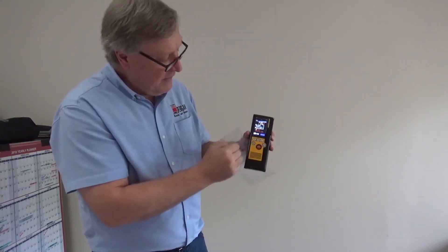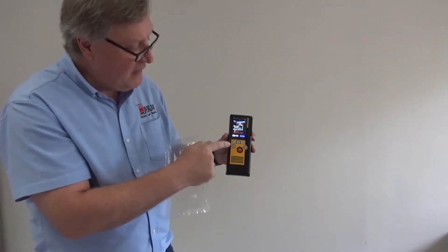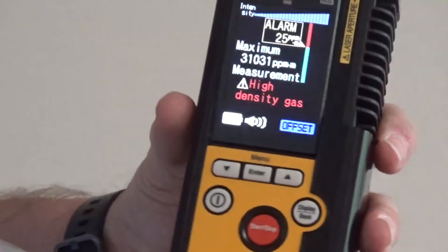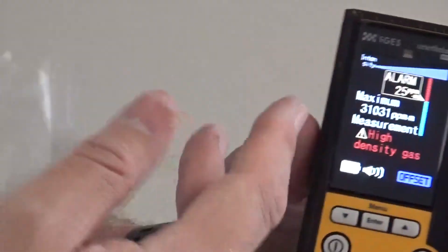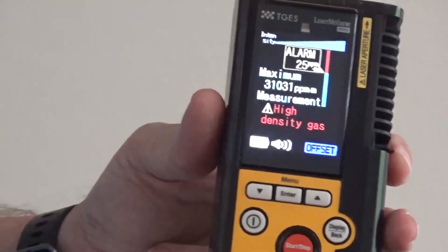And in this case, because we have lab methane in here, we have a message on the user interface that says high density gas. And we have 31,000 parts per million as a result of that. Thank you very much.